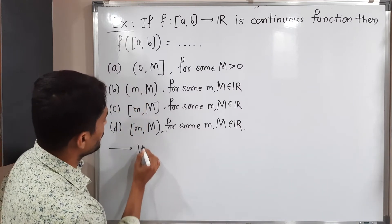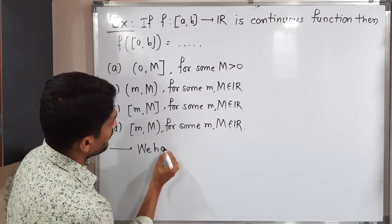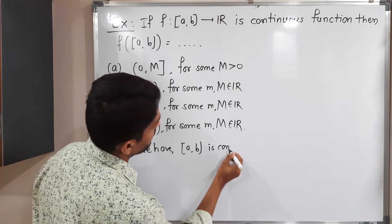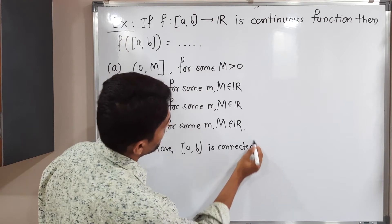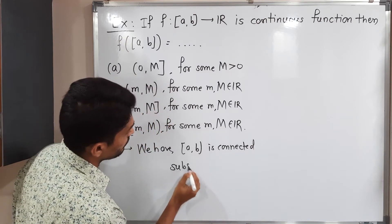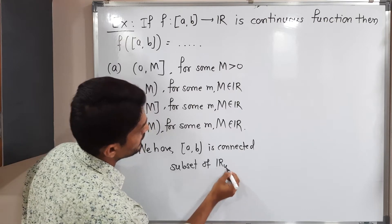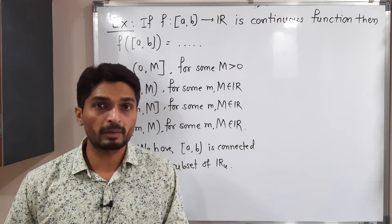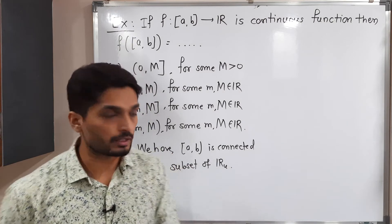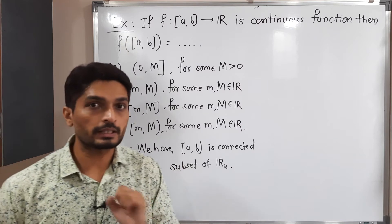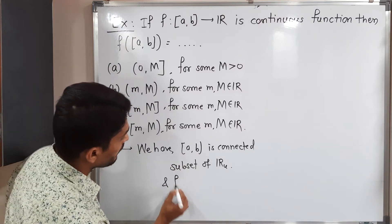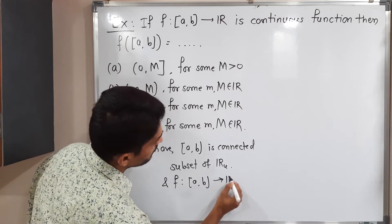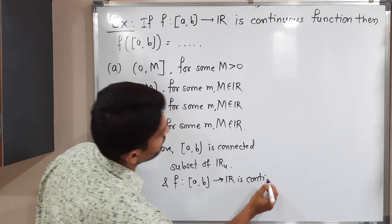Let us start by considering the given information. We have that closed interval [a,b] is a connected subset of R with the usual distance. Since every interval — open or closed — is a connected subset of R, we have an interval, so it is connected. And f from closed interval [a,b] to R is continuous.